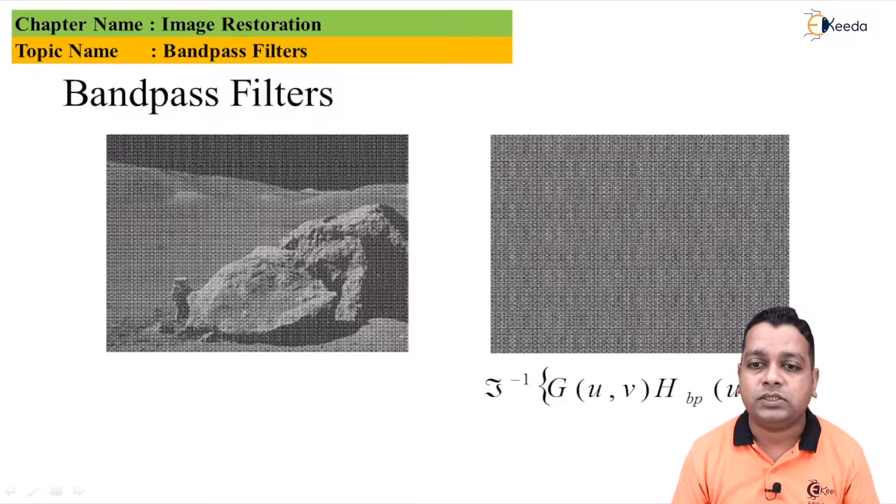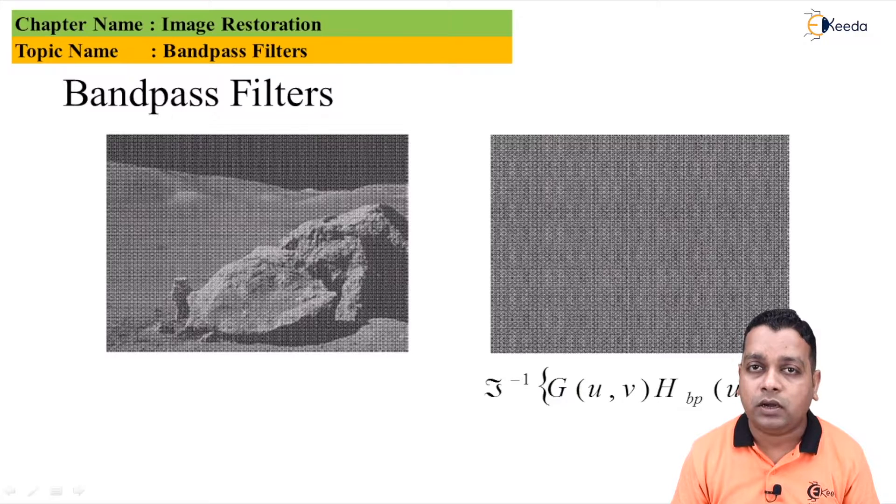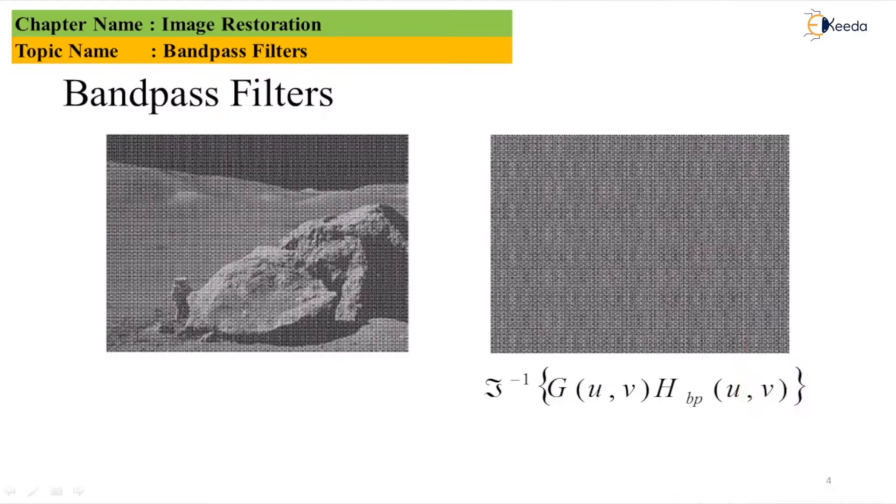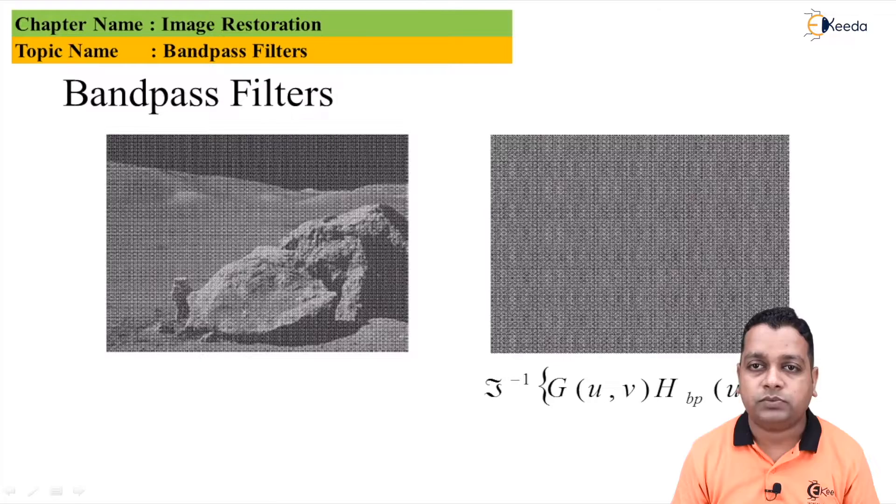This is actually the representation by taking the inverse Fourier transform onto the product of the Fourier transform of the degraded image. So it is represented as capital G of U comma V into H suffix BP of U comma V, that is the filter function with respect to the band pass filters.